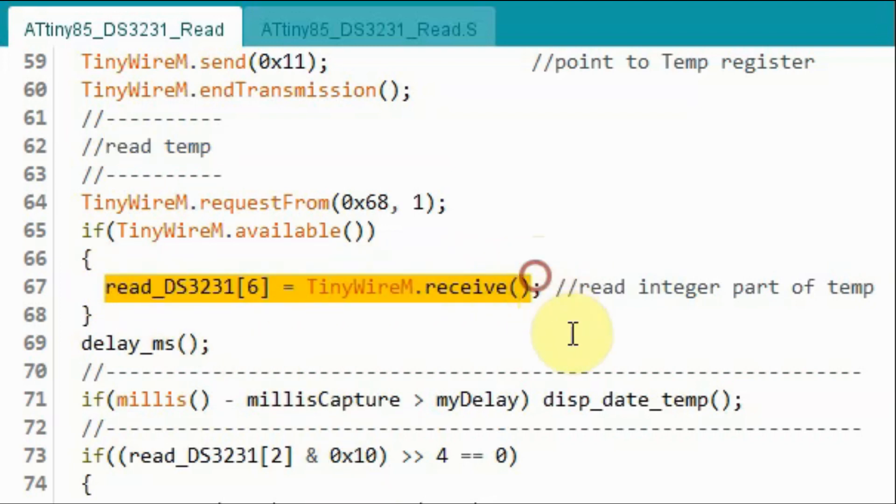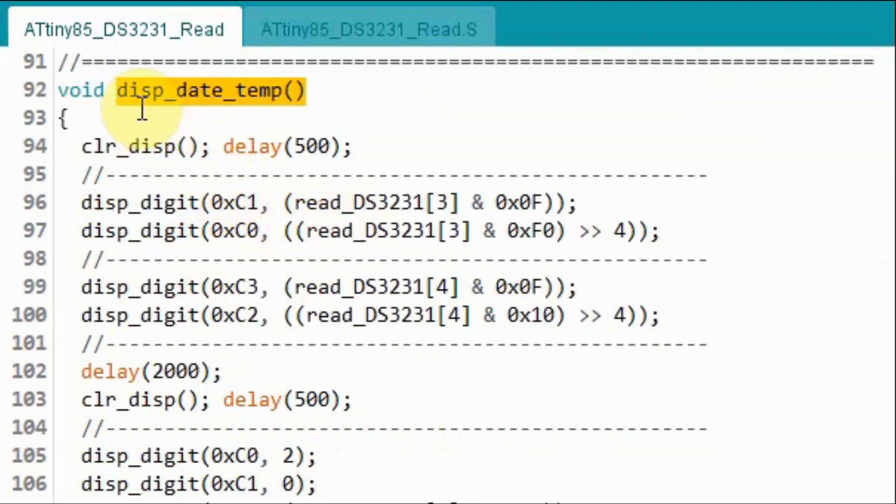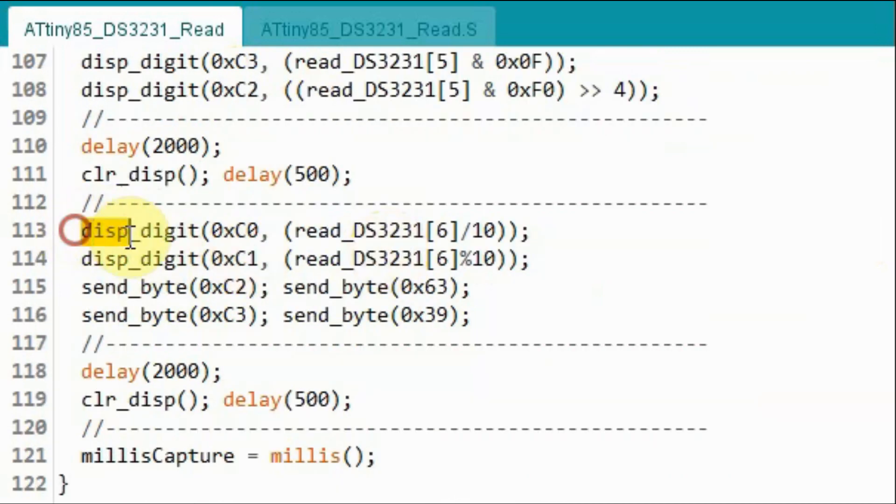The modifications include reading the temperature after we read time and date. So here, we read the integer part of temperature. And inside function display_date_temperature, we can display the temperature in Celsius.